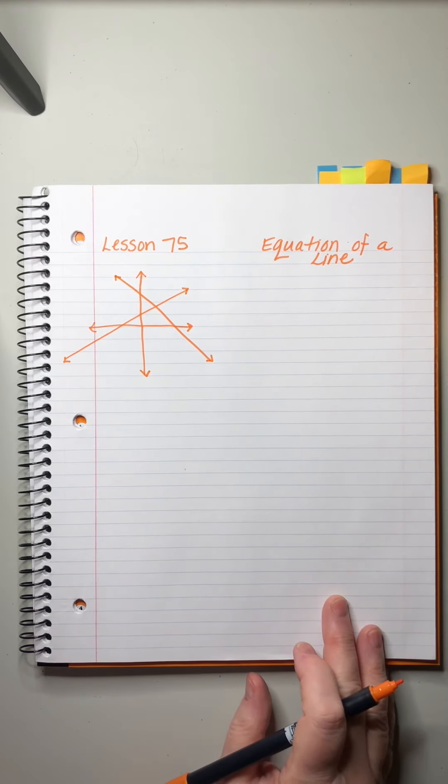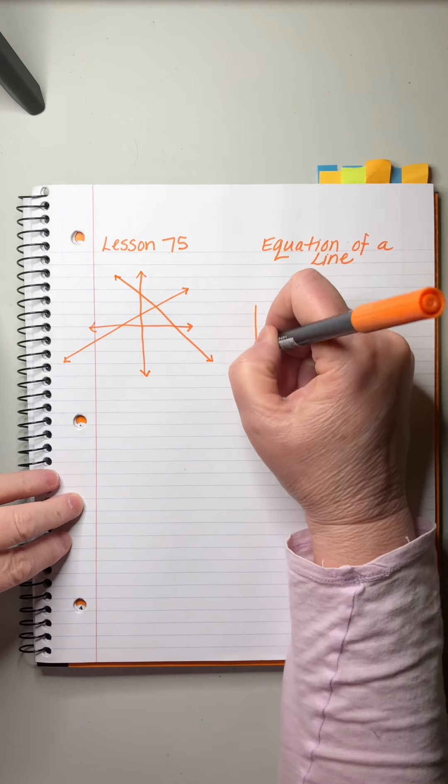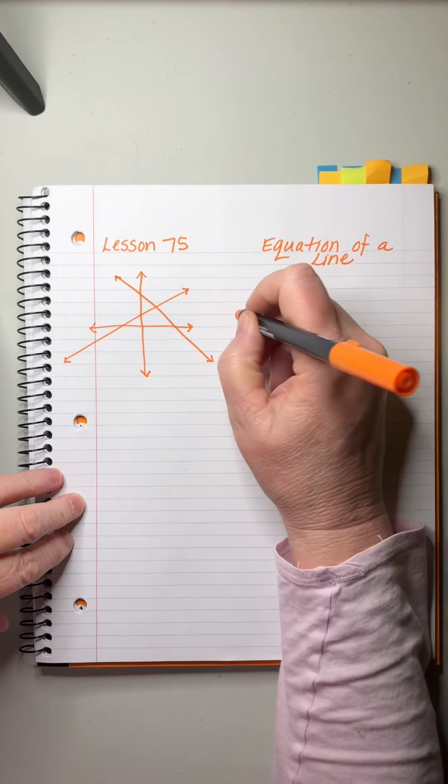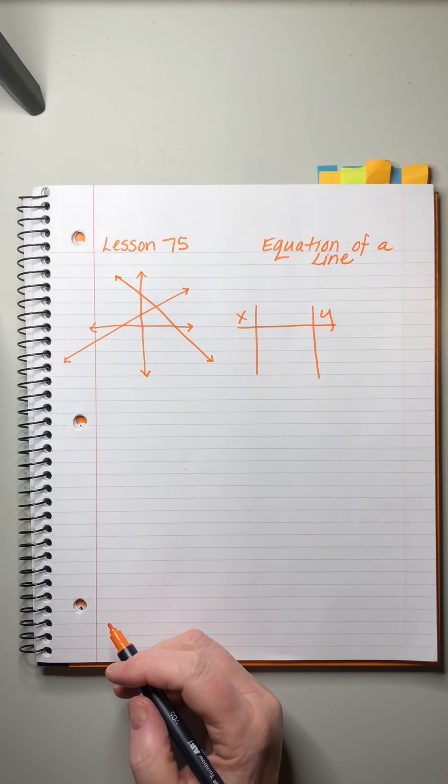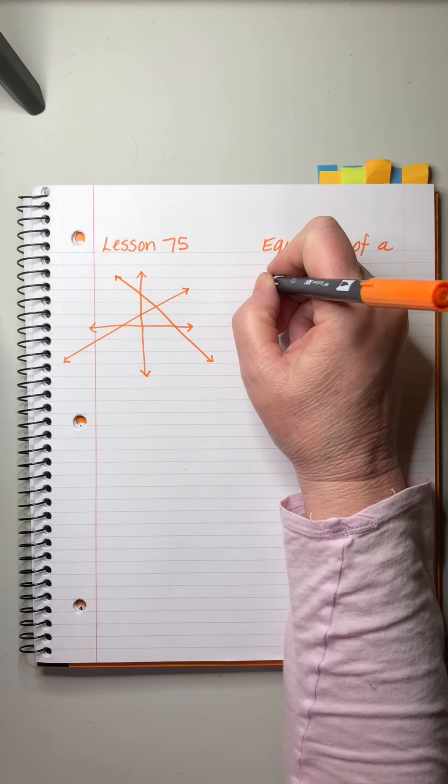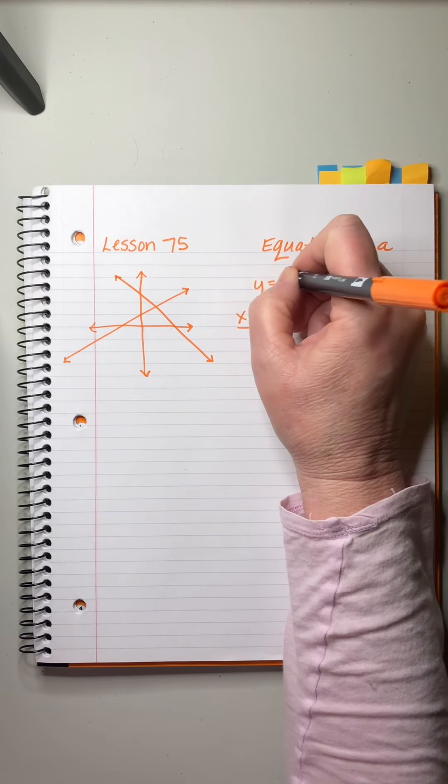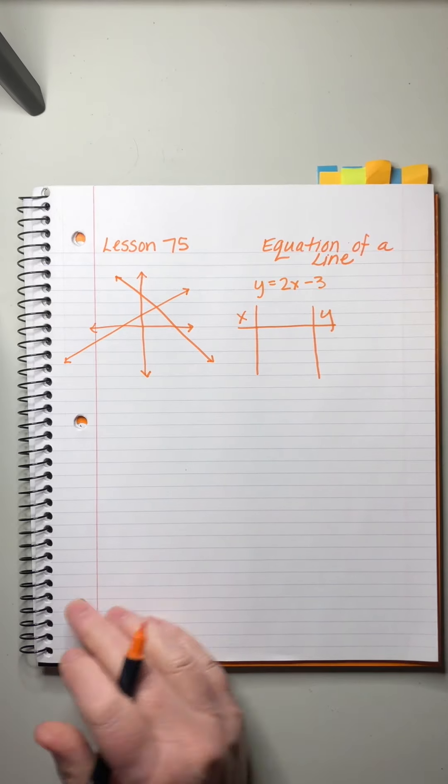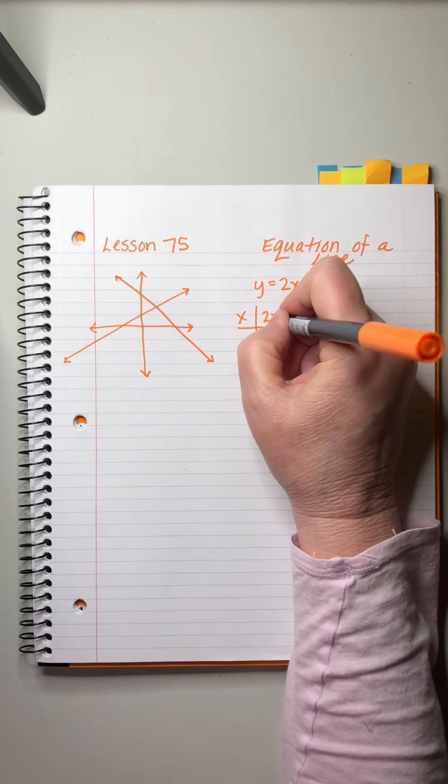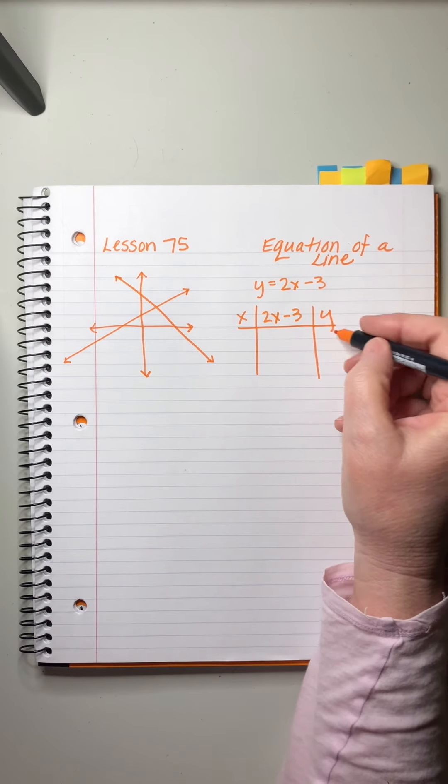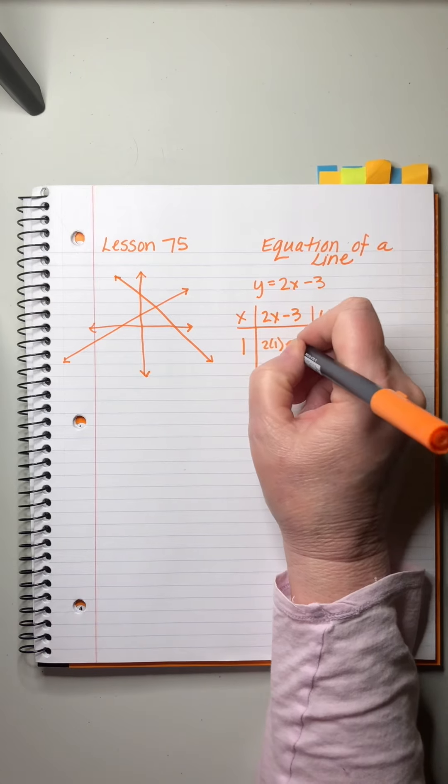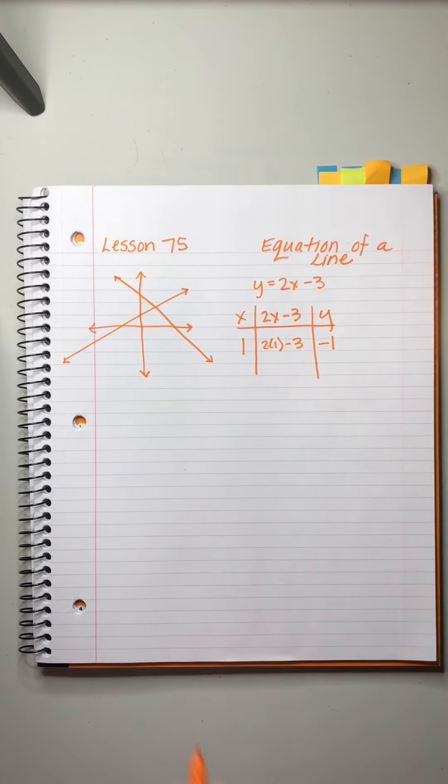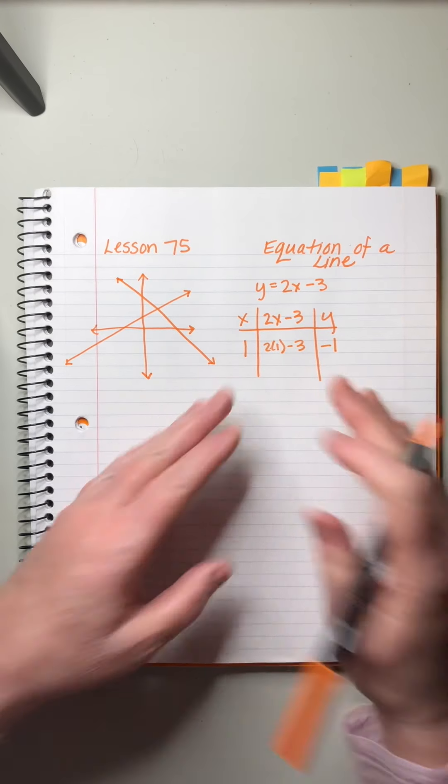You already know how to graph them by making a chart like this, right? And we say here's x and here's y. Let me just give you a made-up equation of a line. Let's just say y equals 2x minus 3. So we can choose values for x and then we calculate 2x minus 3 and then we say that value is our y. So for example, if x is 1, then it's 2 times 1 minus 3. That would be 2 minus 3. That would be negative 1, right? And we can find a handful of points.